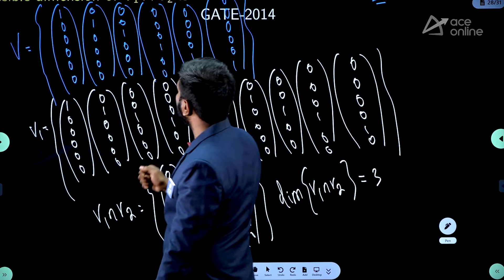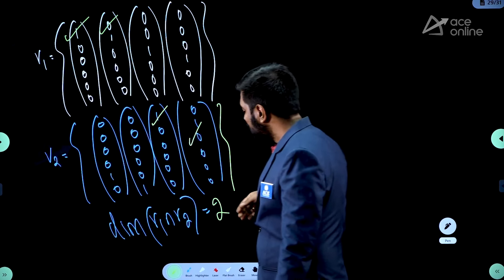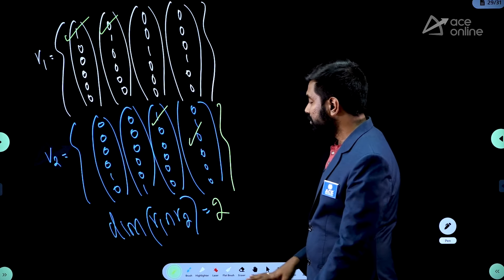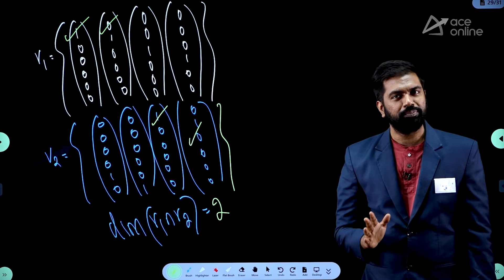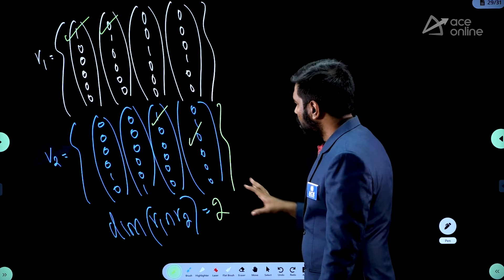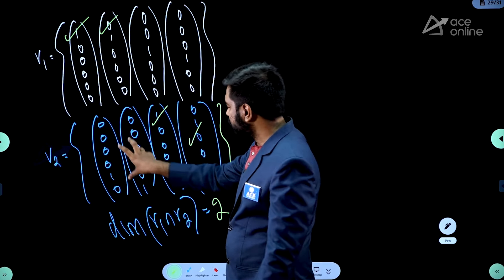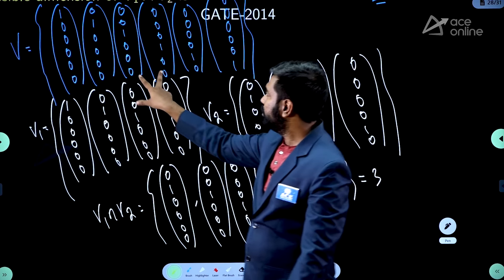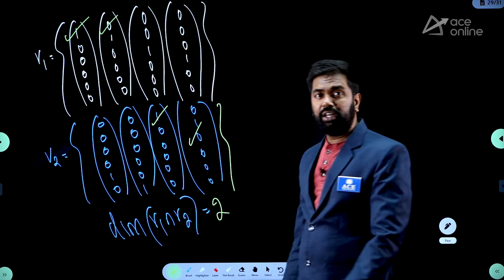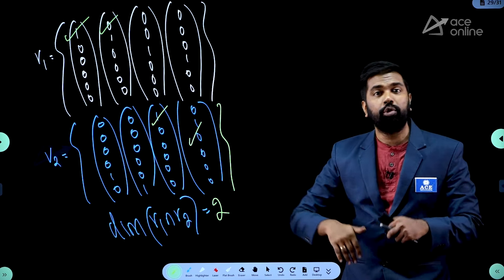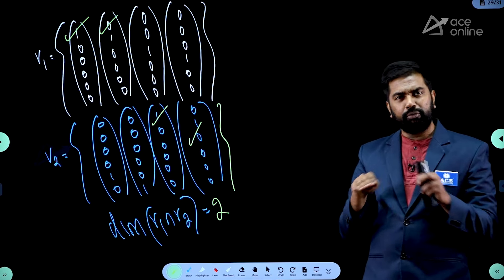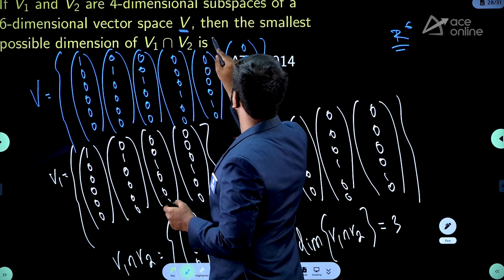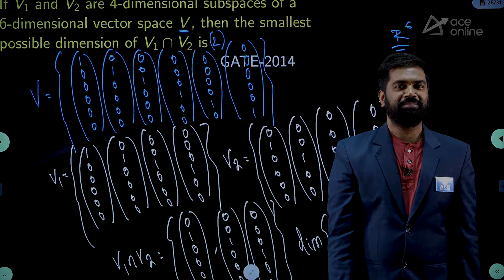The other 2 vectors for V₂ should come from among the 4 vectors in V₁. When you do that, those 2 are also in V₁, so V₁ ∩ V₂ will always have at least dimension 2. You cannot go below 2. You can have dimension 3 or 4 but not 1. Therefore the smallest possible dimension of V₁ ∩ V₂ is 2. Thank you.